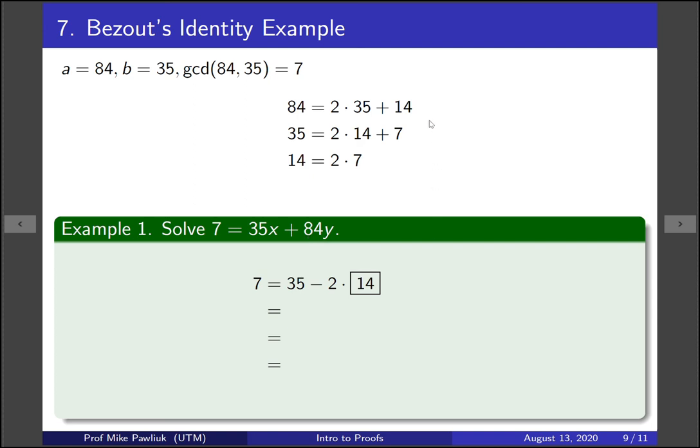So we go back to our work and we see, oh here's a 14 on its own. We can write it as 84 minus 2 times 35. So by using the first equation, we isolate for 14 and replace it by some combination of 84s and 35s. Now this looks kind of awful, but if we expand it out, we have this, and now if we group the 35s together, we end up with exactly what we want.